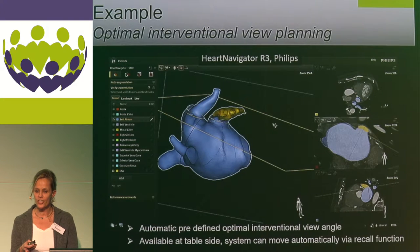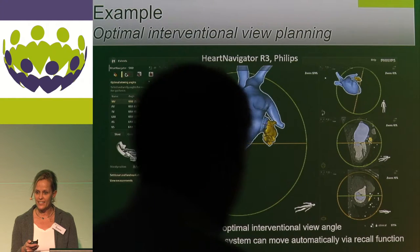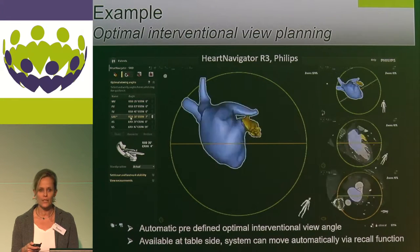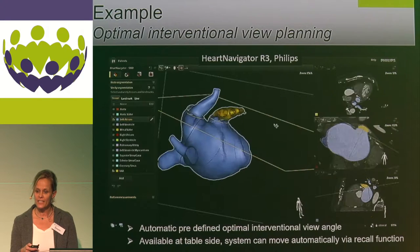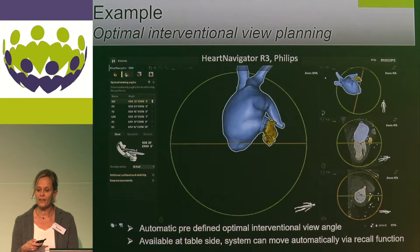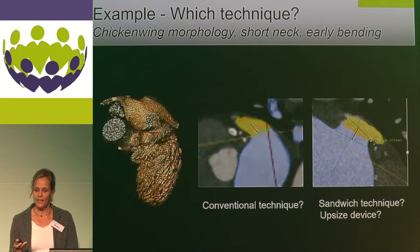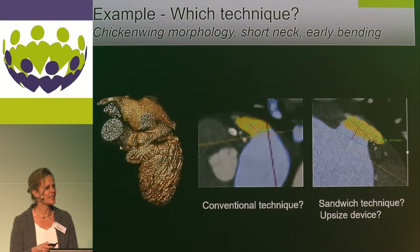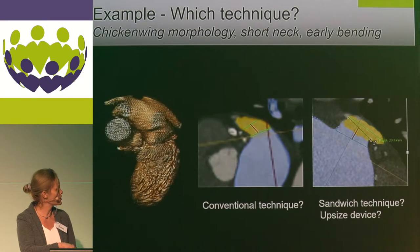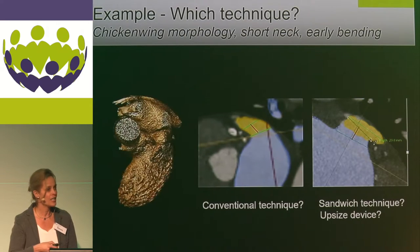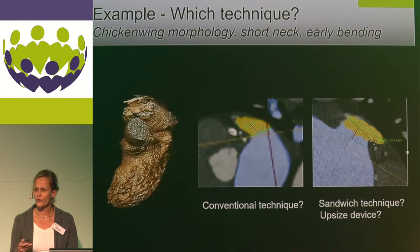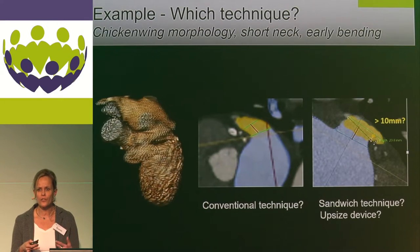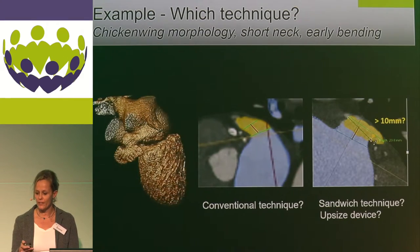Regarding pre-procedural planning of implantation strategy, the Heart Navigator from Philips gives you the opportunity to look at the optimal fluoroscopy angle for device deployment — an automatic pre-defined interventional view angle available at the table side. CT in advance also allows you to decide, as in a case of a chicken wing with very early bending, whether to use a conventional technique or a sandwich technique. If choosing a sandwich technique, you measure the relevant diameter to determine if the device lobe would fit in that chicken wing.